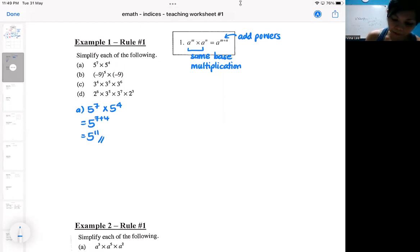So for part B, the base can be a negative number, it doesn't matter. It is a number, the power will indicate how many times you multiply the base. So again, same base multiplication, you add the power.